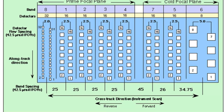Here's a cartoon of the Landsat 7 ETM+ focal planes. The prime focal plane uses silicon detectors sensitive to blue, green, red, and near-infrared. The cold focal plane houses the shortwave infrared detectors and the thermal detectors. Because longer wavelengths carry less energy, the thermal detectors produce 60-meter pixels, the shorter wavelengths yield 30-meter pixels, and the panchromatic band — a wide spectral region — gives 15-meter pixels.